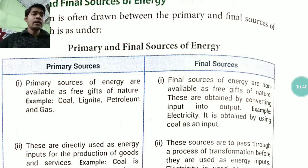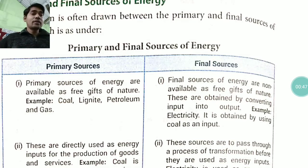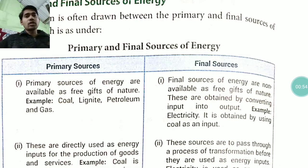Final sources are not a free gift. These are obtained by converting an input into an output. For example, electricity is obtained by using coal as an input — if you need electricity, you use coal to produce it.